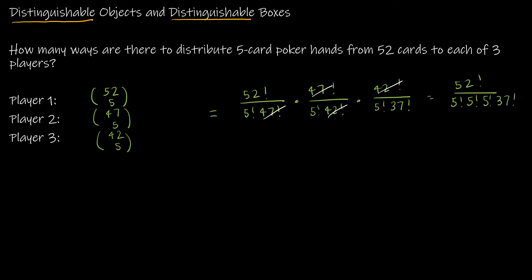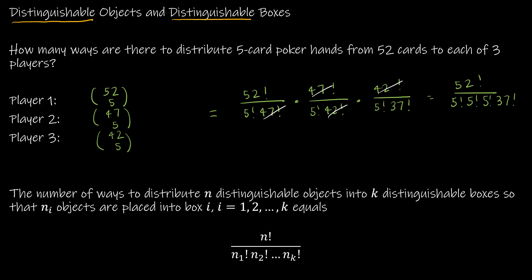This is like a multinomial coefficient except there's still a 37 factorial left over, representing the 37 cards not being chosen. This does have a closed formula: take n factorial — so 52 factorial — over the factorials of each group. We have k distinguishable boxes where the first box gets 5 (player one), the second gets 5 (player two), the third gets 5 (player three), and the fourth gets 37 (the leftover cards).